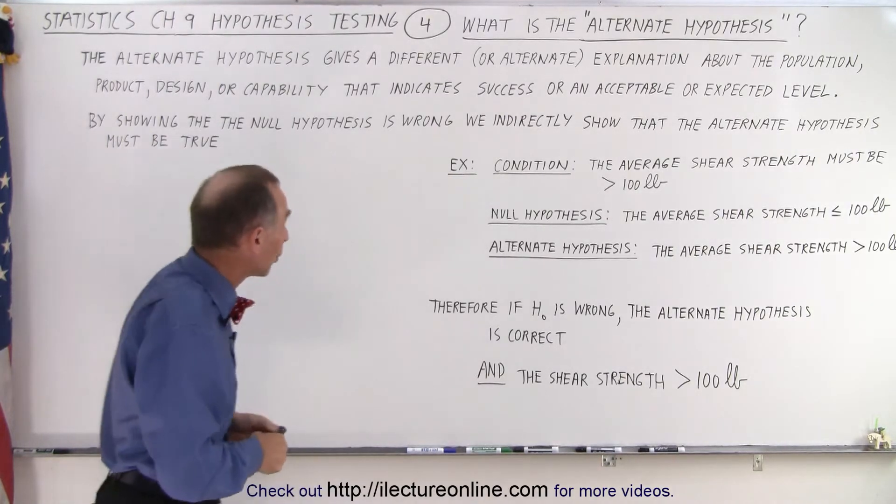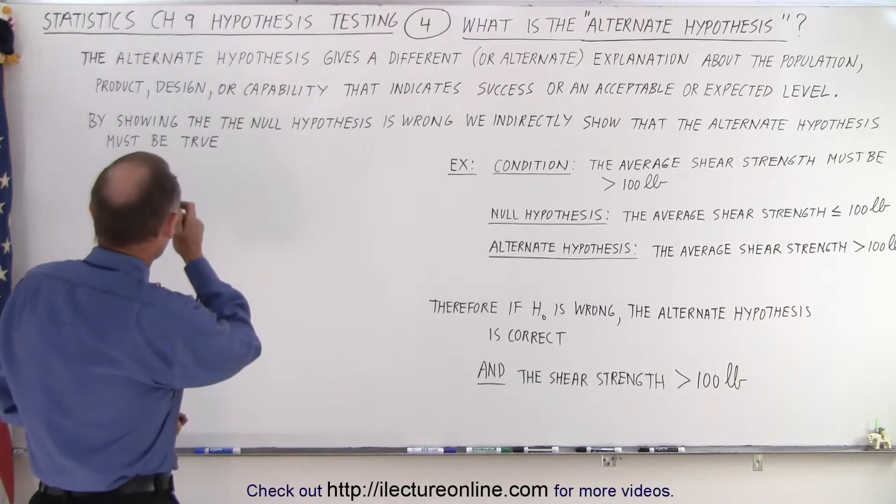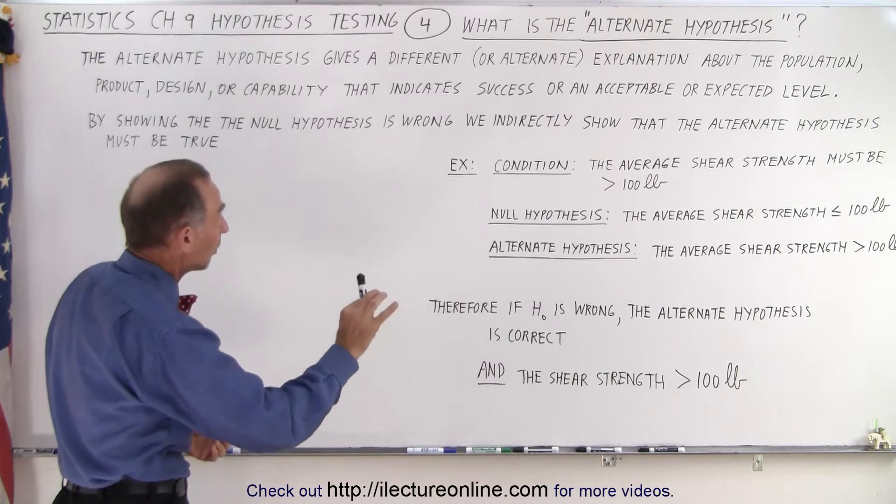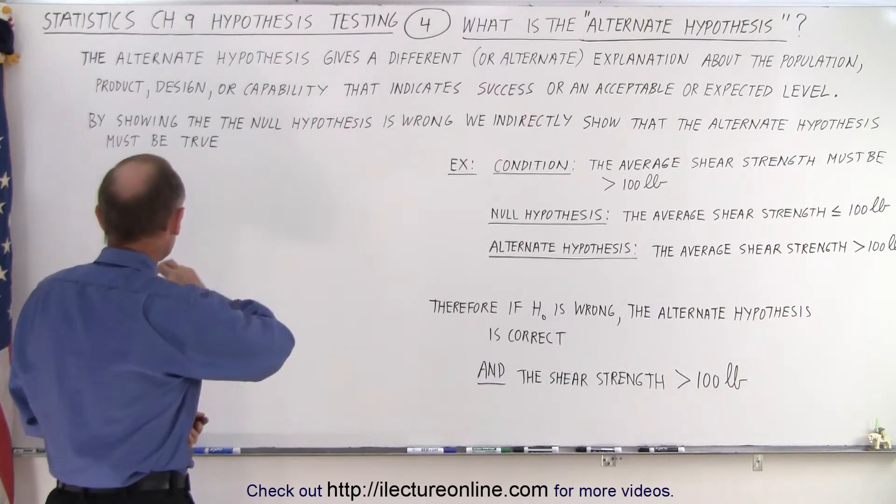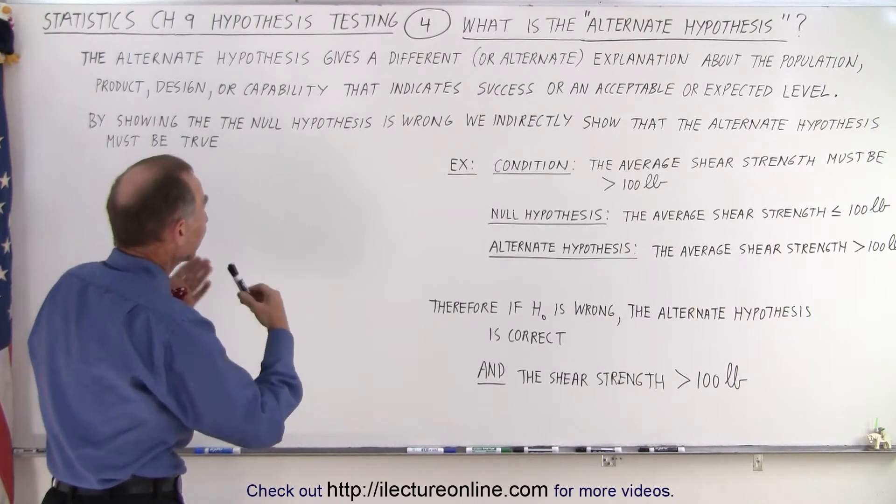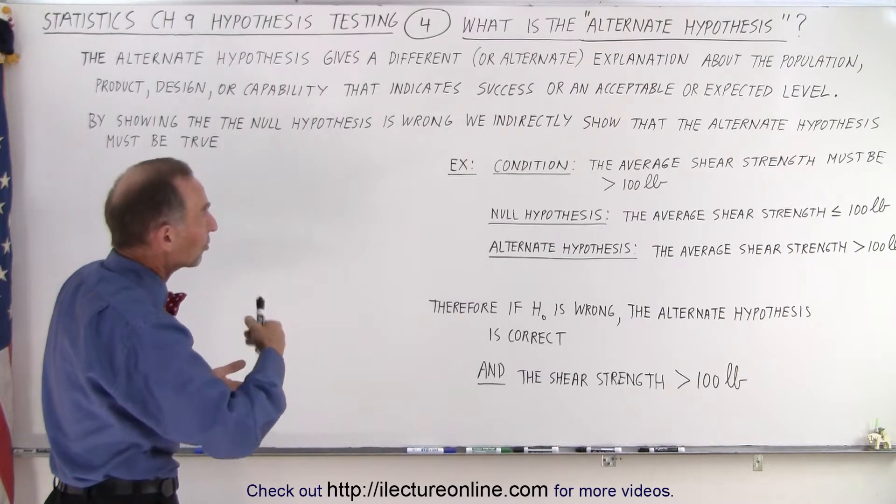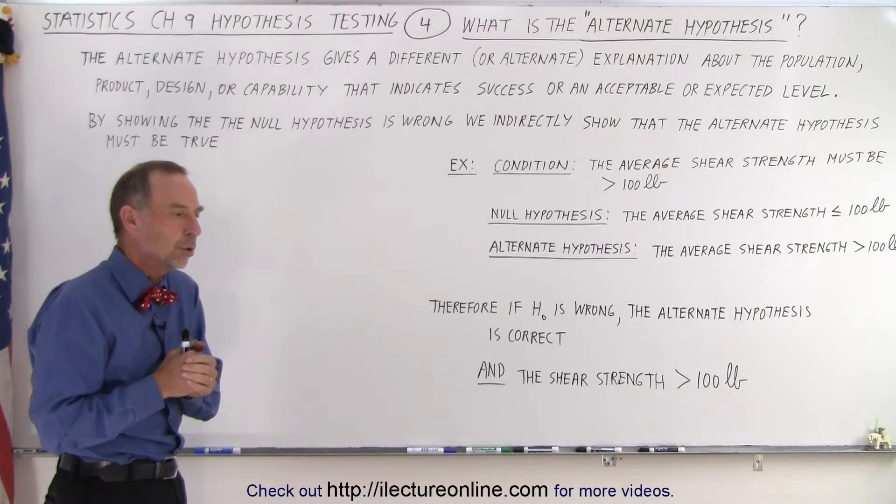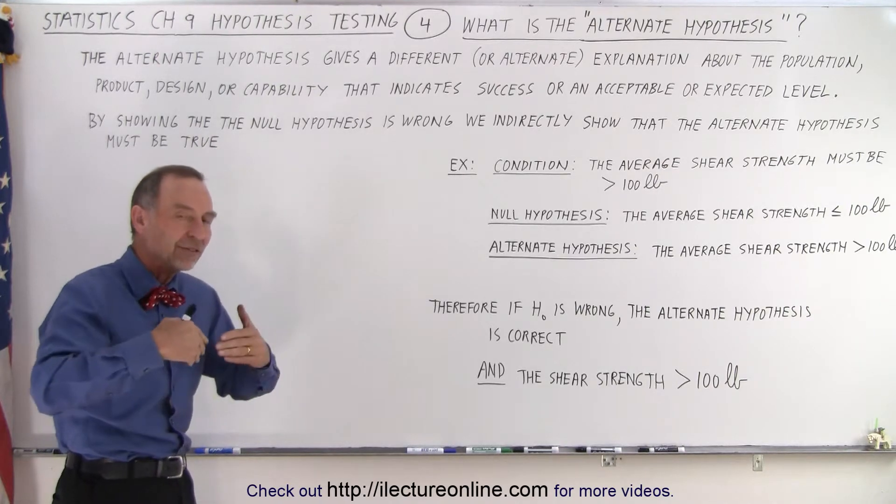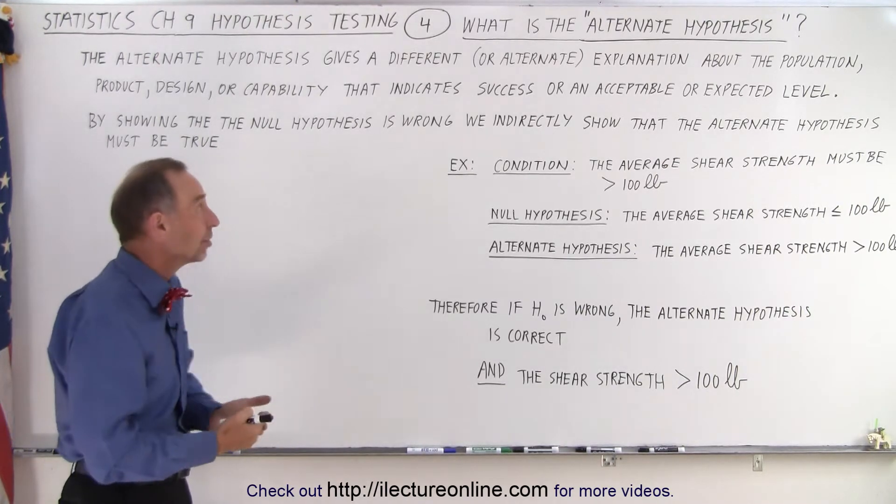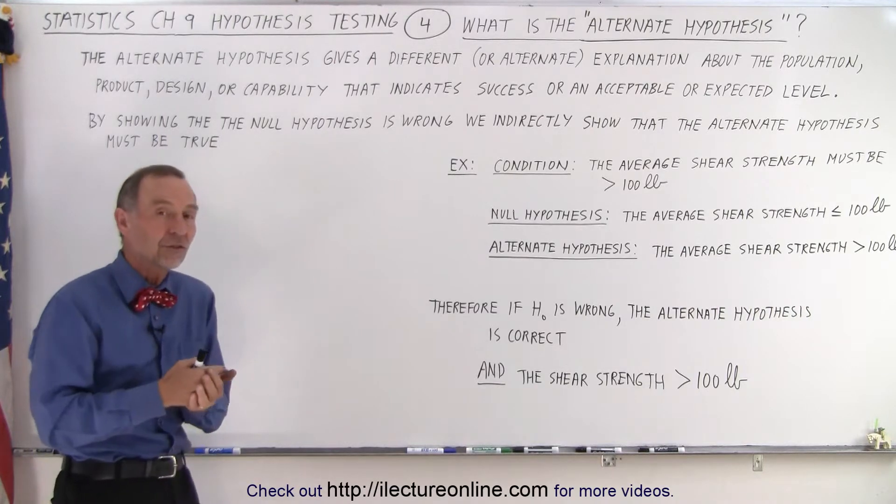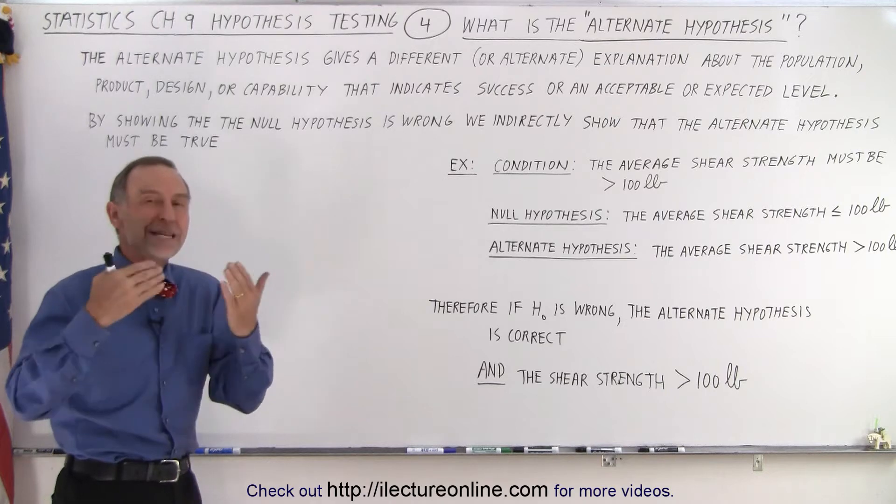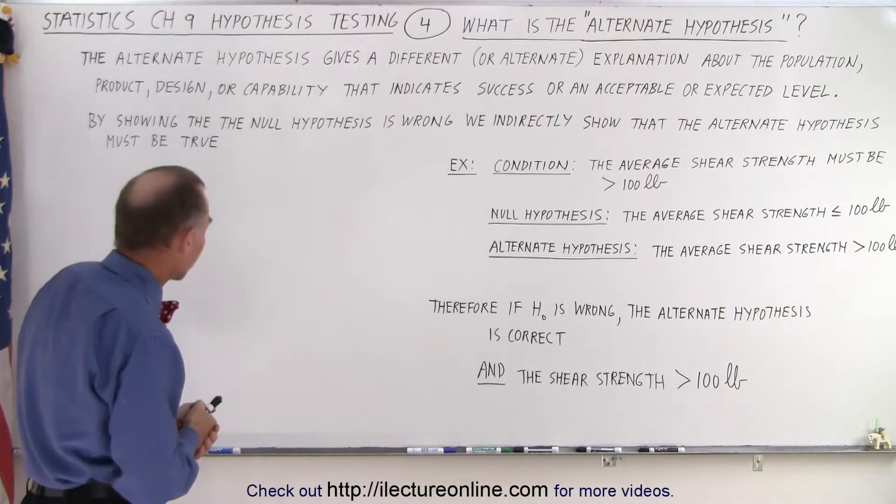We have a definition on the board that says the following: the alternate hypothesis gives a different or alternate explanation about the population, the product, the design, or the capability that indicates success or an acceptable or expected level. So the null hypothesis defines failure or not meeting an expected level. The alternate hypothesis defines how the product or the population meets that expected value, that expected level.